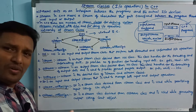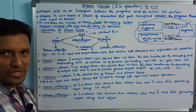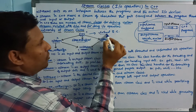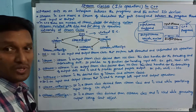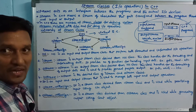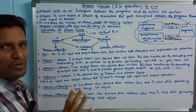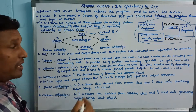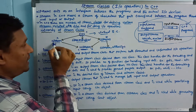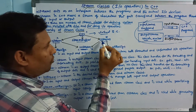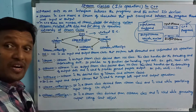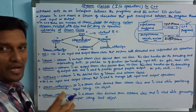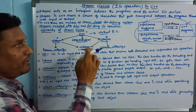IOS is a virtual base class. From it, istream, ostream, and streambuf are derived. Streambuf means memory — temporary memory. That memory is managed by the streambuf class.